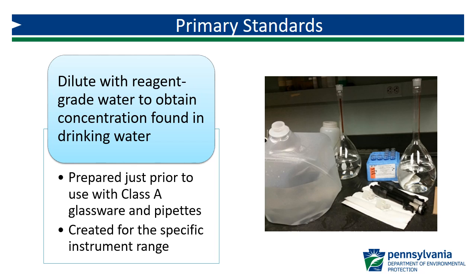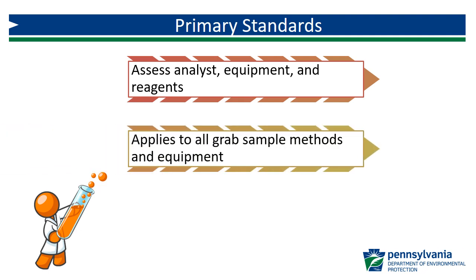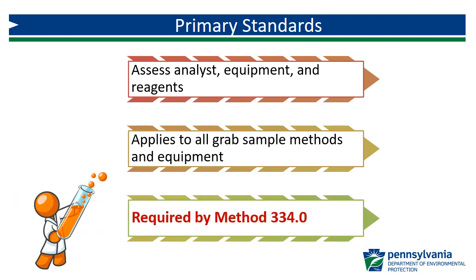Check standards are created for the particular range being used. Primary standard analysis can be used to evaluate the analyst, the equipment, and the reagents used for a specific method. Primary standard protocols in Method 334.0 can be applied to all approved grab sample methods and associated equipment. Most importantly, primary standard protocols included in Method 334.0 are a required component of the method.